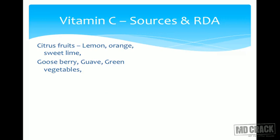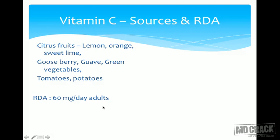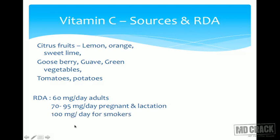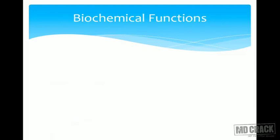Sources of vitamin C include all citrus foods like lemon, orange, and sweet lime, as well as gooseberry, green vegetables, tomatoes, and potatoes. The RDA is around 60 mg/day in adults, 70–95 mg/day during pregnancy and lactation, and goes up to 100 mg/day for smokers.